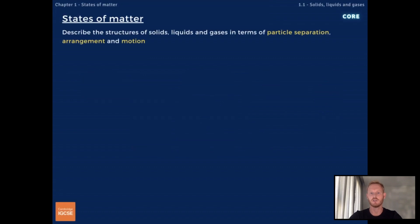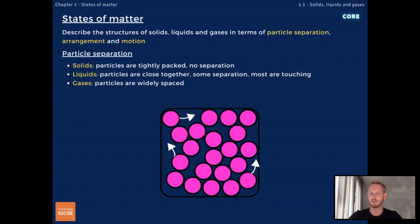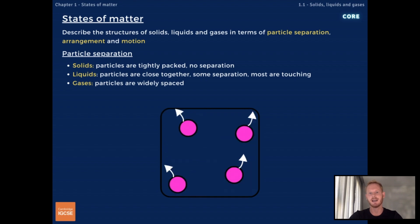You need to describe the structures of solids, liquids and gases in terms of particle separation, arrangement and motion. Beginning with particle separation: in solids, particles are tightly packed, so there's no separation or space between them. In liquids, there is some separation, although particles are still very close and most are touching. In gases, particles are widely spaced, so there are big gaps between them.